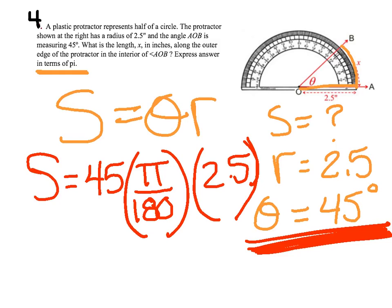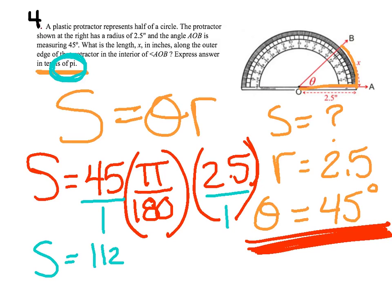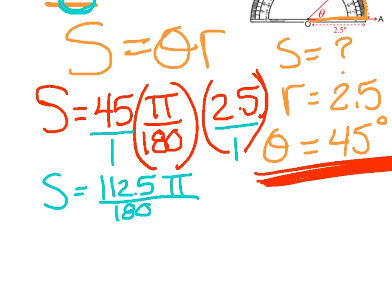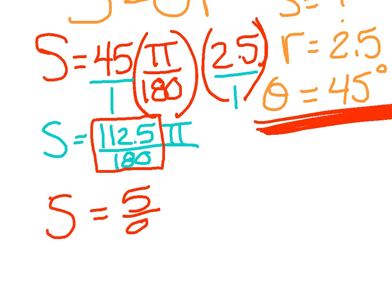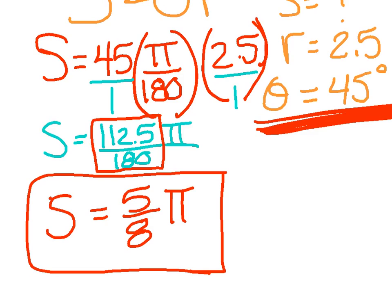Since the answer must be in terms of pi, I multiply across the top: 45 times 2.5 gives 112.5, so I have 112.5 pi over 180. Dividing 112.5 by 180 gives 0.625, and using the Math Frac button it reduces to 5 over 8. So the arc length is 5π/8 inches — a simplified fraction with pi at the end, not a decimal.